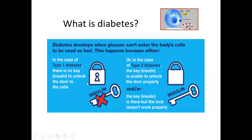In type 1 diabetes mellitus, insulin is not there — there is no key — so the pores are not open and glucose cannot enter the body cells. In type 2 diabetes mellitus, either the insulin, which is the key, is unable to open the door lock of the glucose channel because it is not properly or strongly created, or the key is there but the door lock is faulty and not working properly.